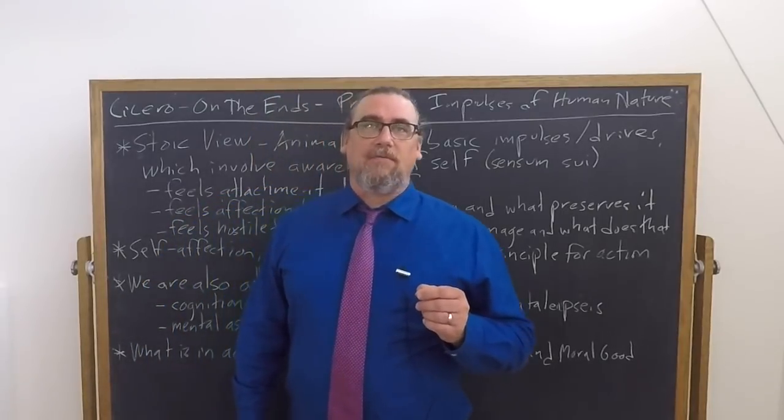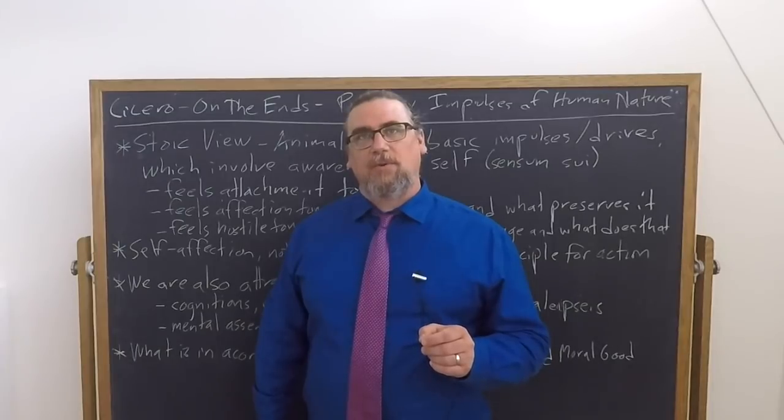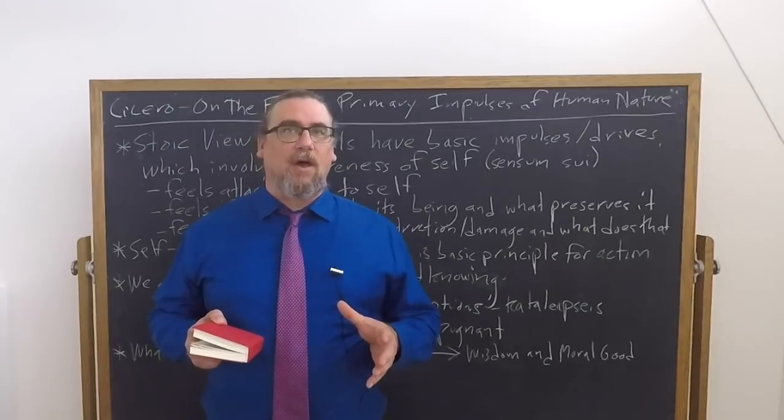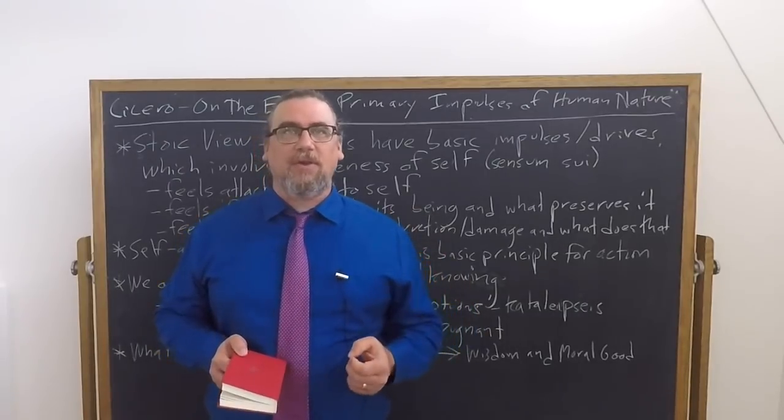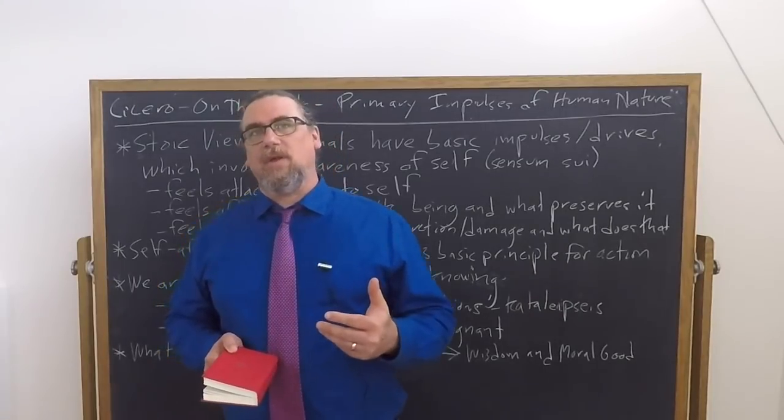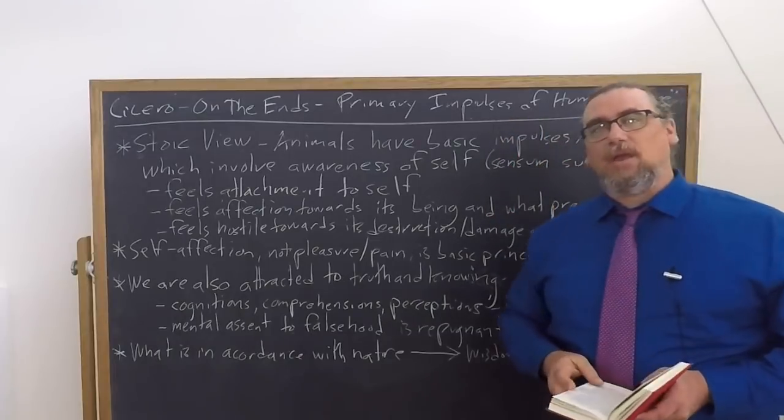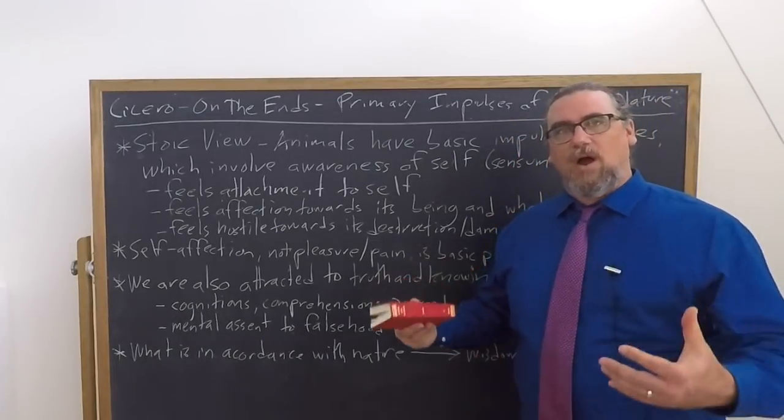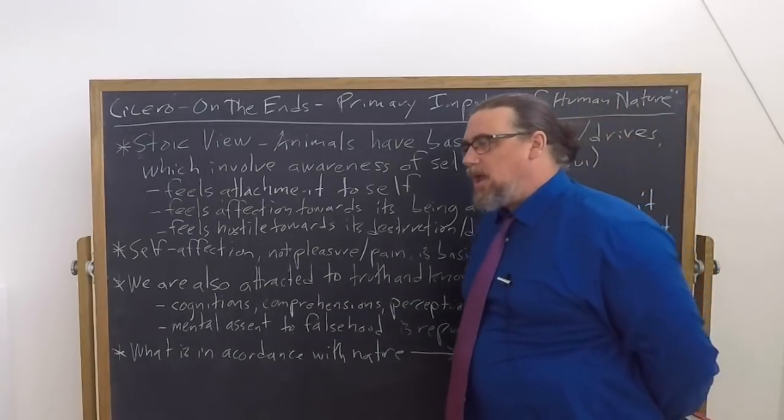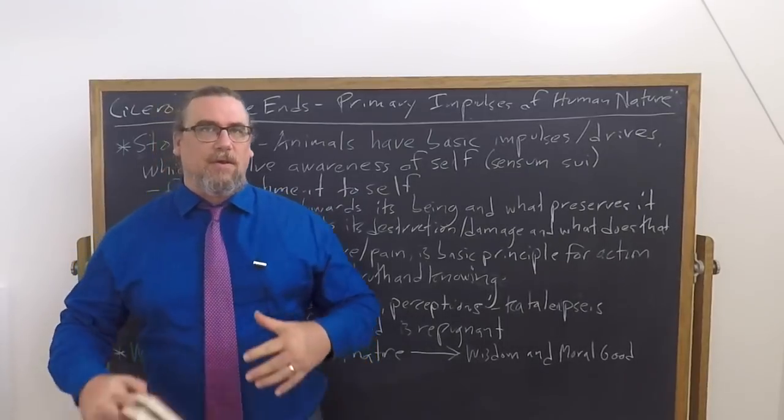In book three of On the Ends, Cicero has Cato, as the representative of the Stoic school, set out some of the basics of Stoic ethical theory. And one of the key ideas that he brings up very early on has to do with what we can call the primary impulses or drives or orientations of human nature. And there's really two things going on here in this discussion.